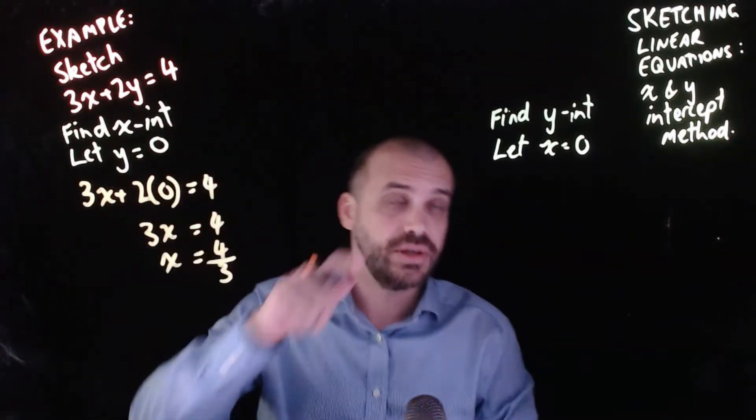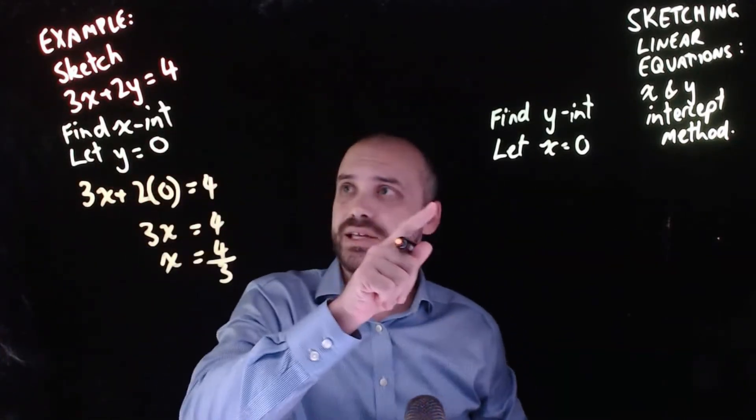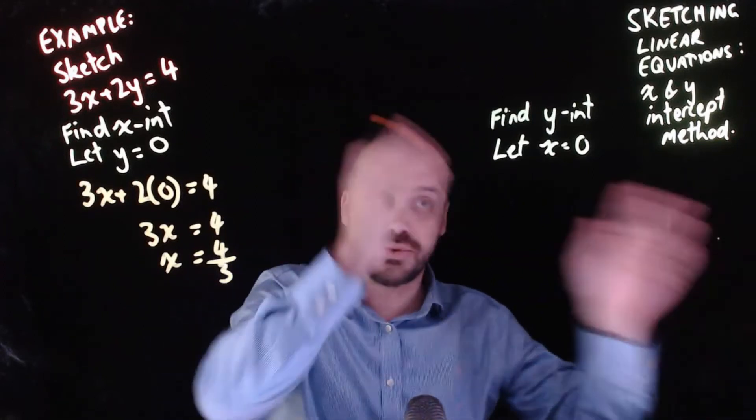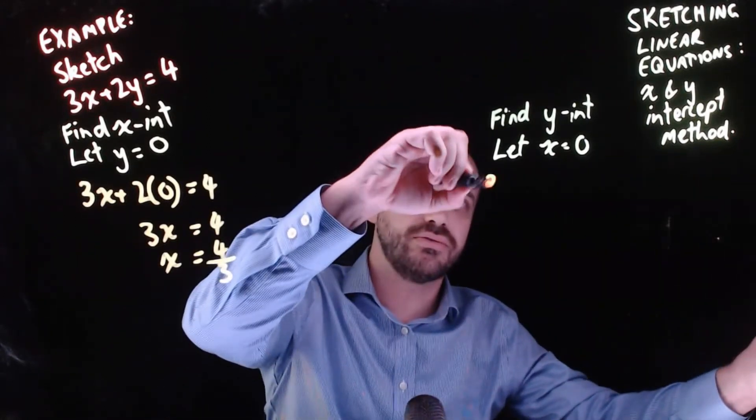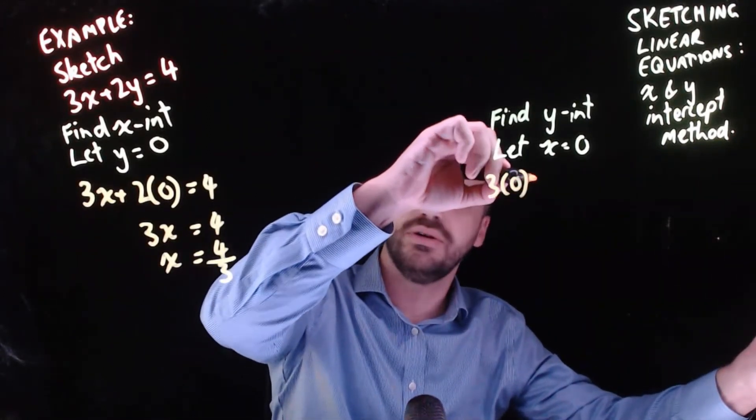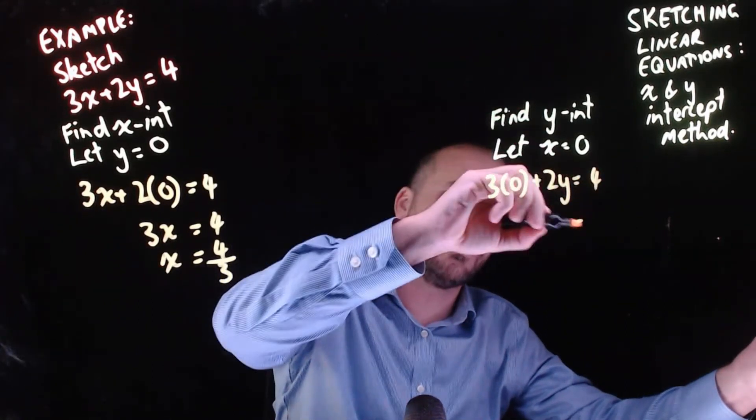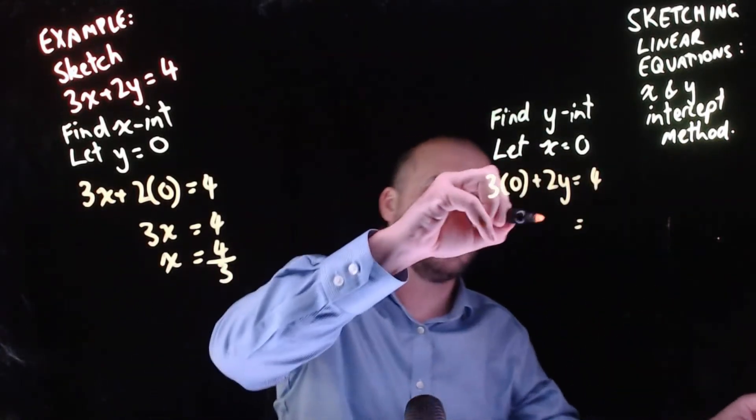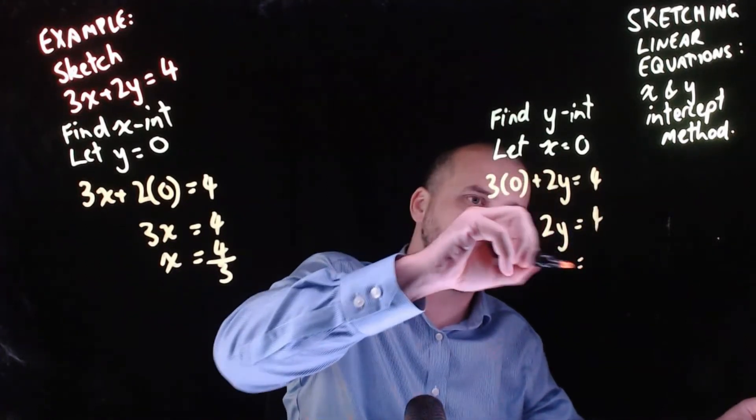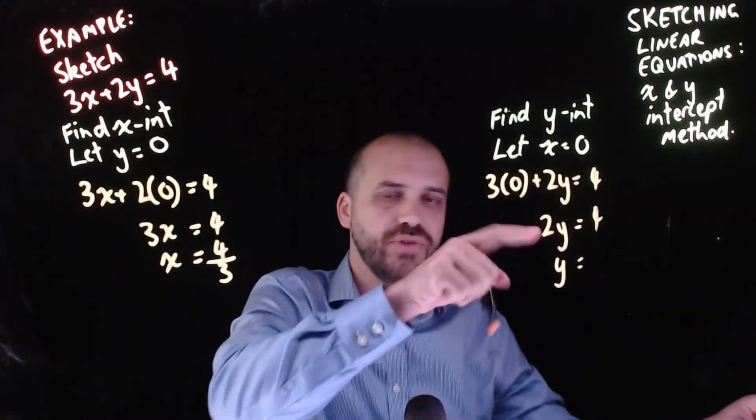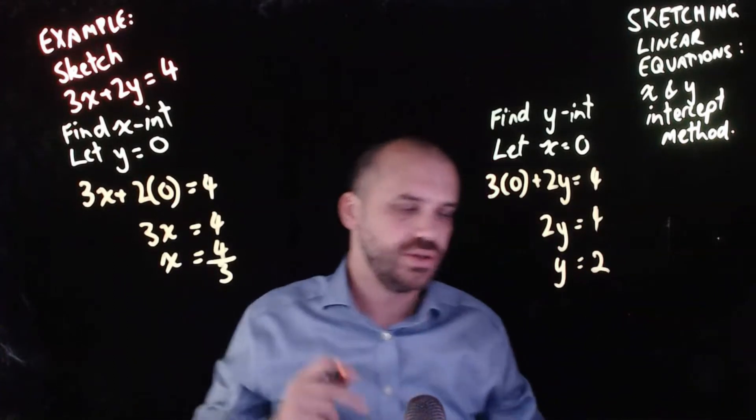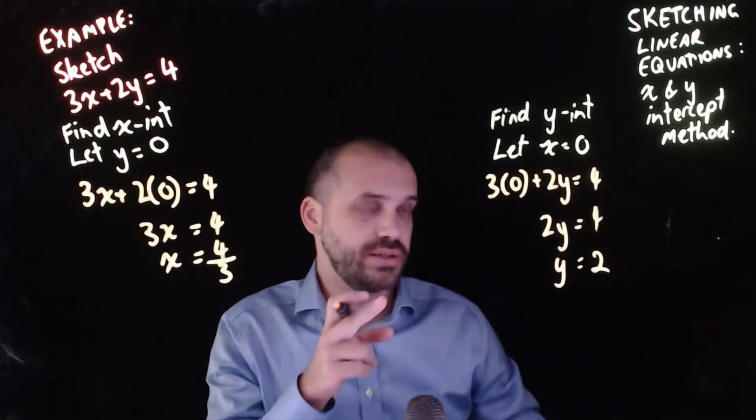To find the y intercept, let x equal zero. We do exactly what it says. 3 times 0 plus 2y equals 4. 3 times 0 is 0, so we're left with 2y equals 4, which means y equals 4 divided by 2, which is 2. We have our y intercept.